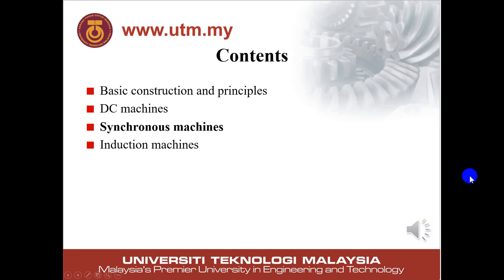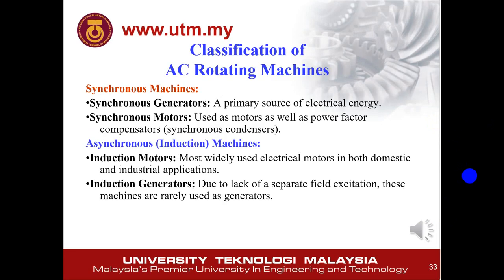We continue our study with AC machines. As mentioned before, there are two types of AC machine: synchronous machine and induction machine. We start with the synchronous machine. Each machine has a motor and generator. For the synchronous generator, it is usually used in power generation. The synchronous motor is not very commonly used, but it is used in power factor compensation.